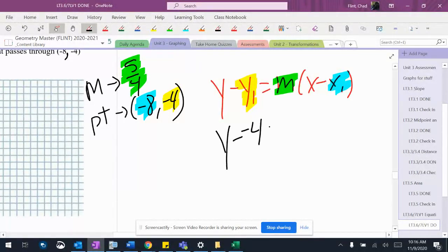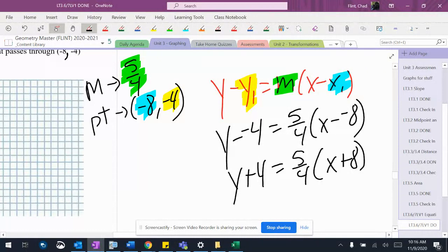So Y minus negative 4 equals 5 fourths times X minus negative 8, which is going to be Y plus 4 equals 5 fourths times X plus 8.